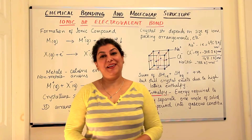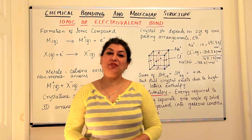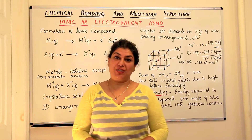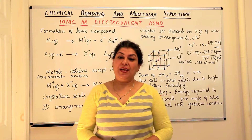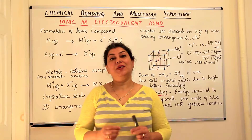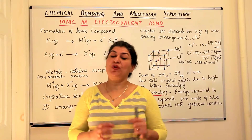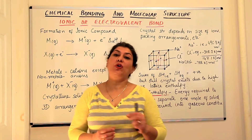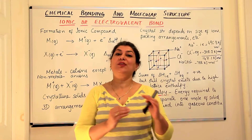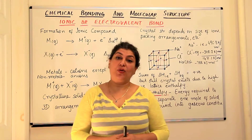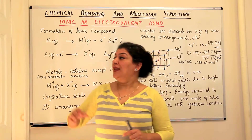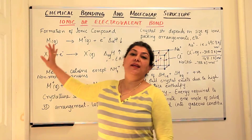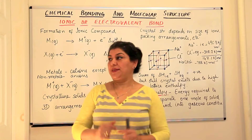Hello, I'm Seema and welcome to part 5 of the chapter Chemical Bonding and Molecular Structure. We have been studying about the Lewis-Langmuir concept of covalent bonds, and I told you about the Causal Lewis approach and how electrovalent bonds are made according to them. Moving on with that knowledge, let us now try to understand the electrovalent bond better.